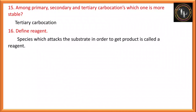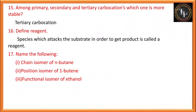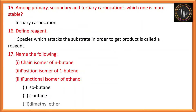A species which attacks a substrate in order to get a product is called a reagent. Name the following: the chain isomer of N-butane is isobutane, since N-butane is a straight chain with four carbon atoms and isobutane has one branch. The position isomer of 1-butene is 2-butene. The functional isomer of ethanol is dimethyl ether. Ethanol and ether are functional isomers, and aldehyde and ketones are also functional isomers.